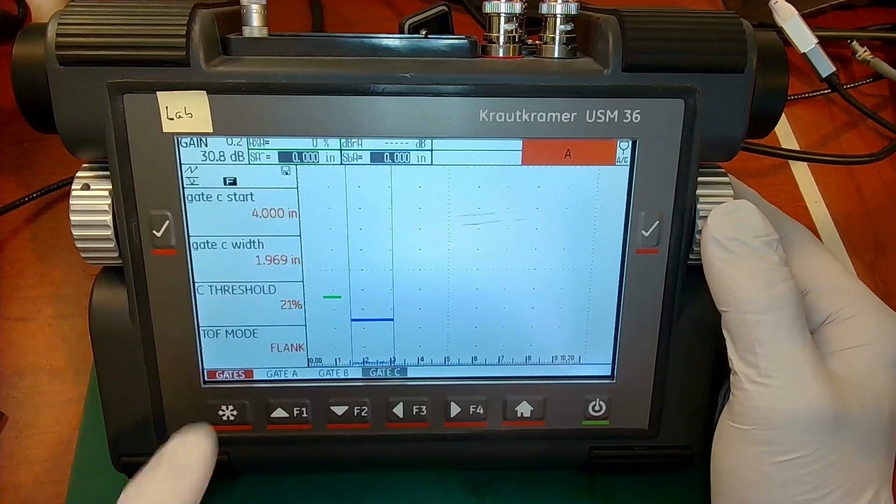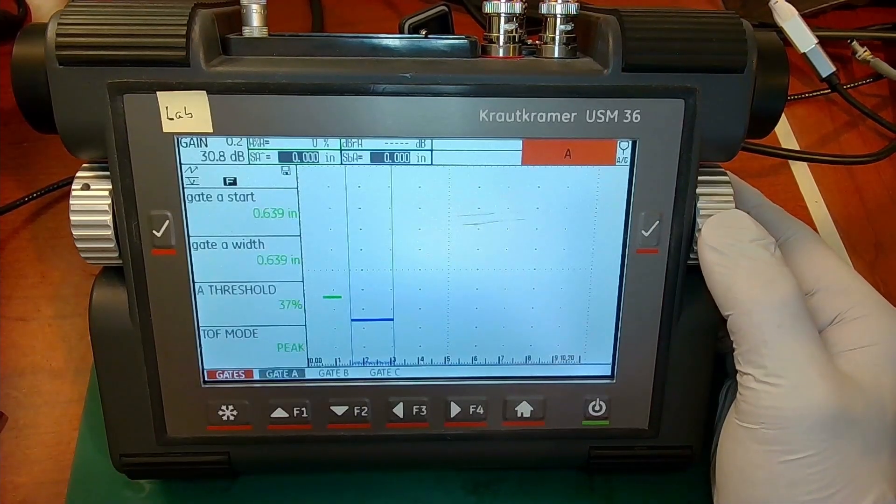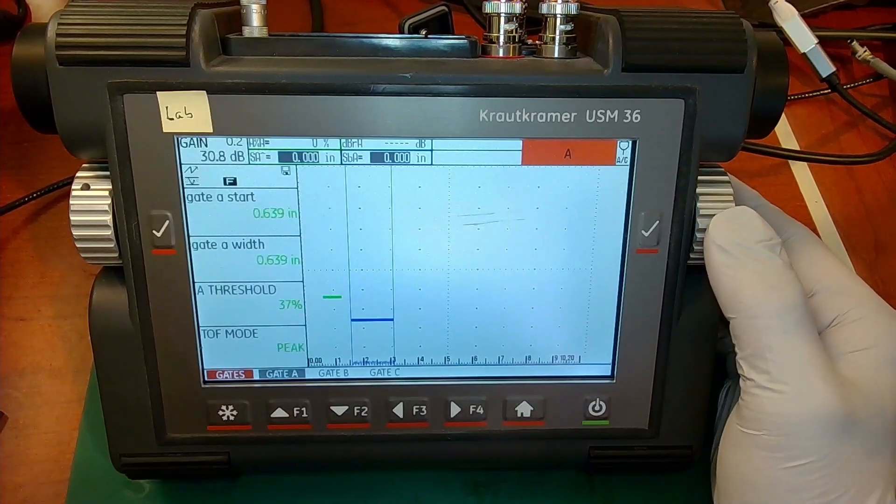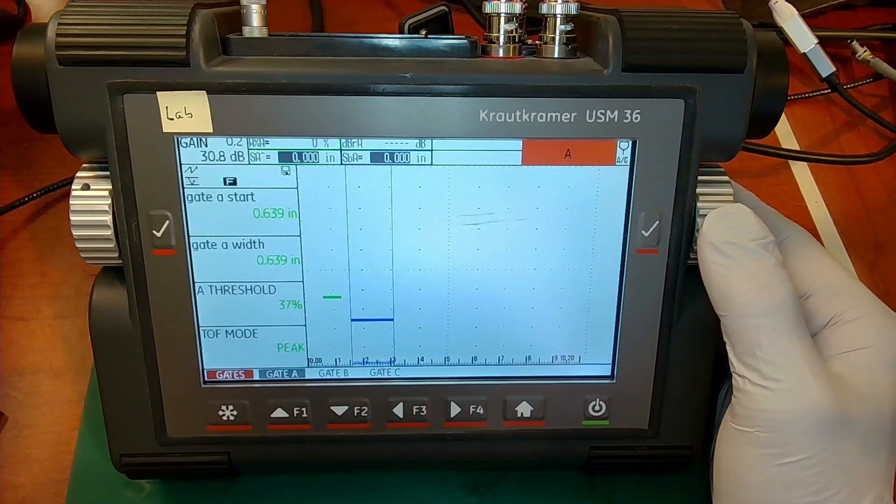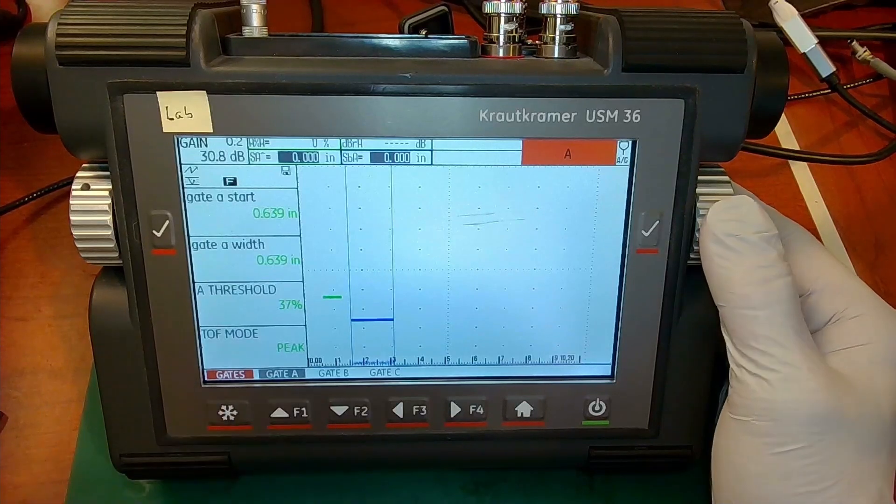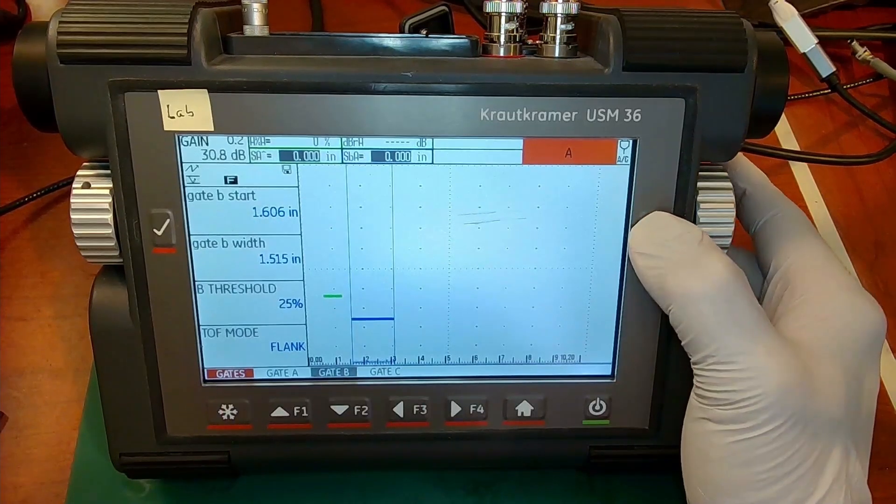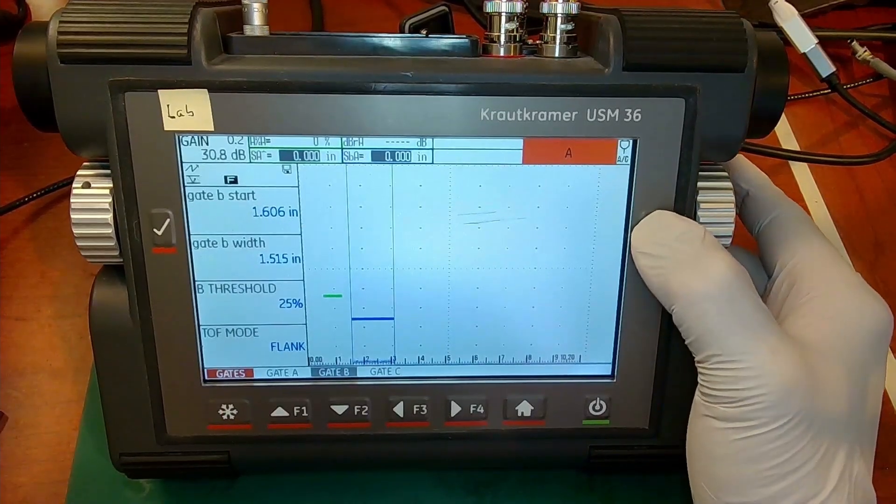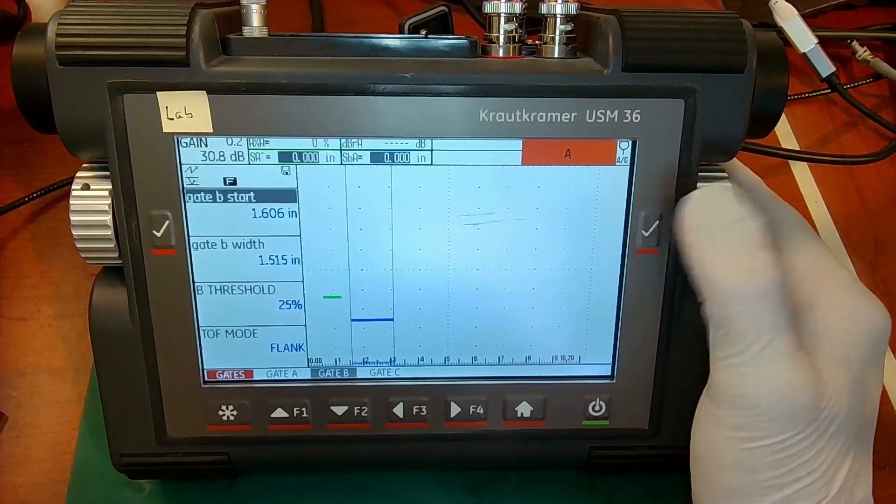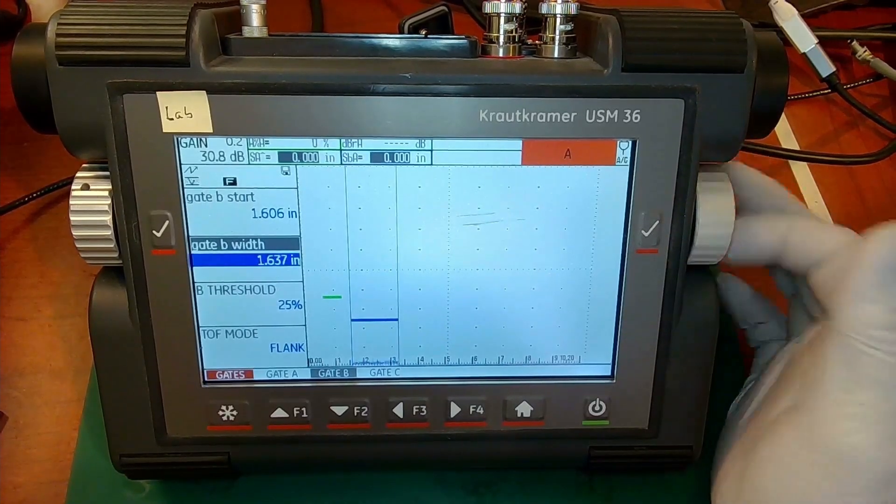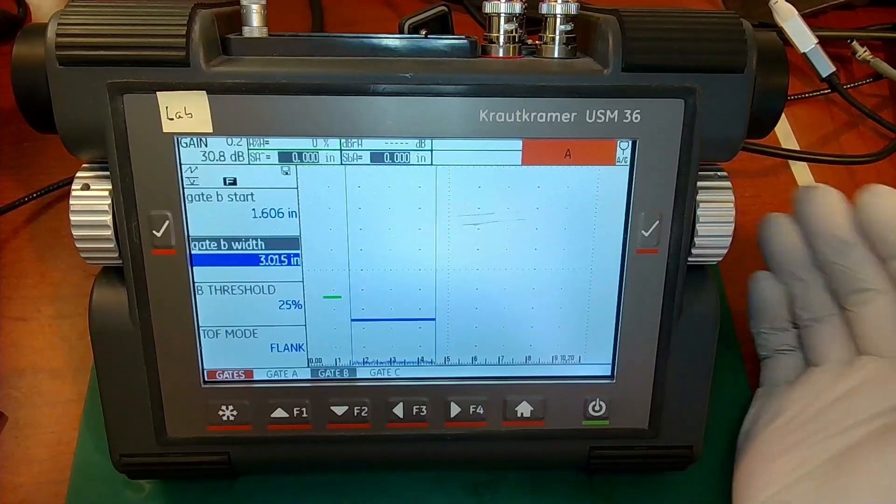So each gate has basically the same set of parameters for it. So I can make gate B wider.